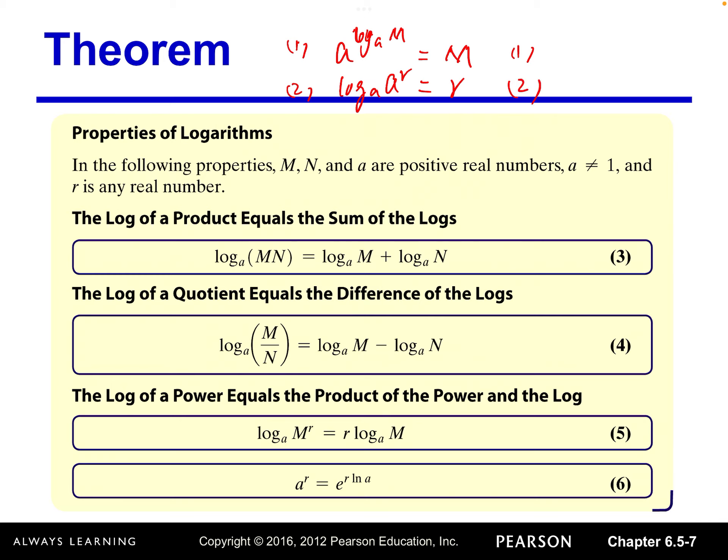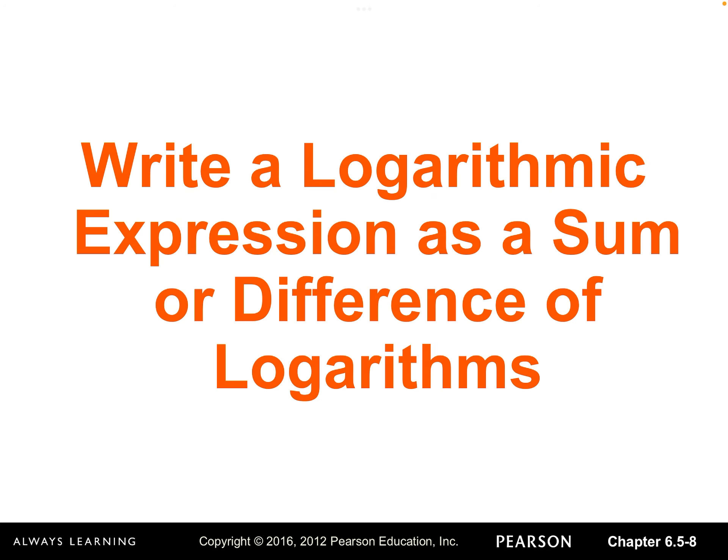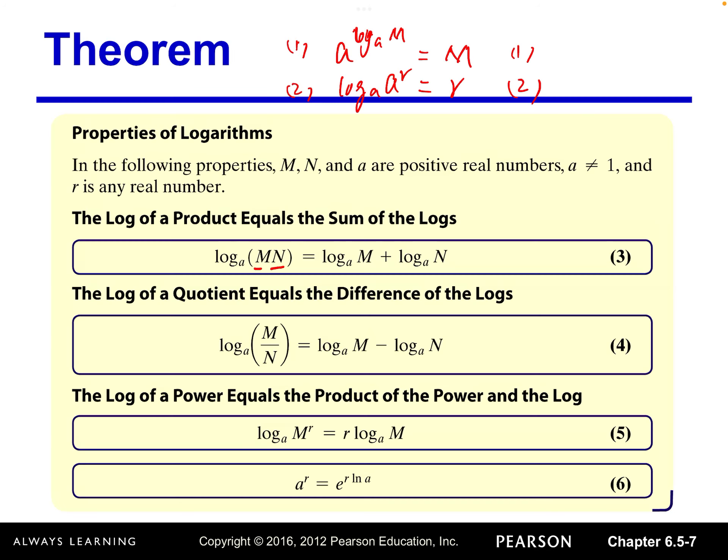Now we are going to introduce four more properties of logarithms. Number three: the log of a product equals the sum of the logs. So log base a of (m times n) is equivalent to log base a of m plus log base a of n.